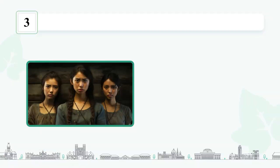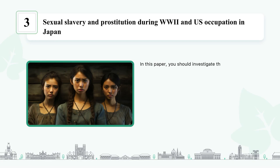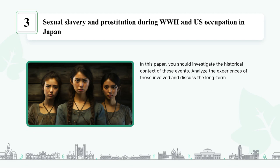Sexual slavery and prostitution during World War II and U.S. occupation in Japan: in this paper you should investigate the historical context of these events, analyze the experiences of those involved, and discuss the long-term consequences. How can we bring awareness to this tragic aspect of history?